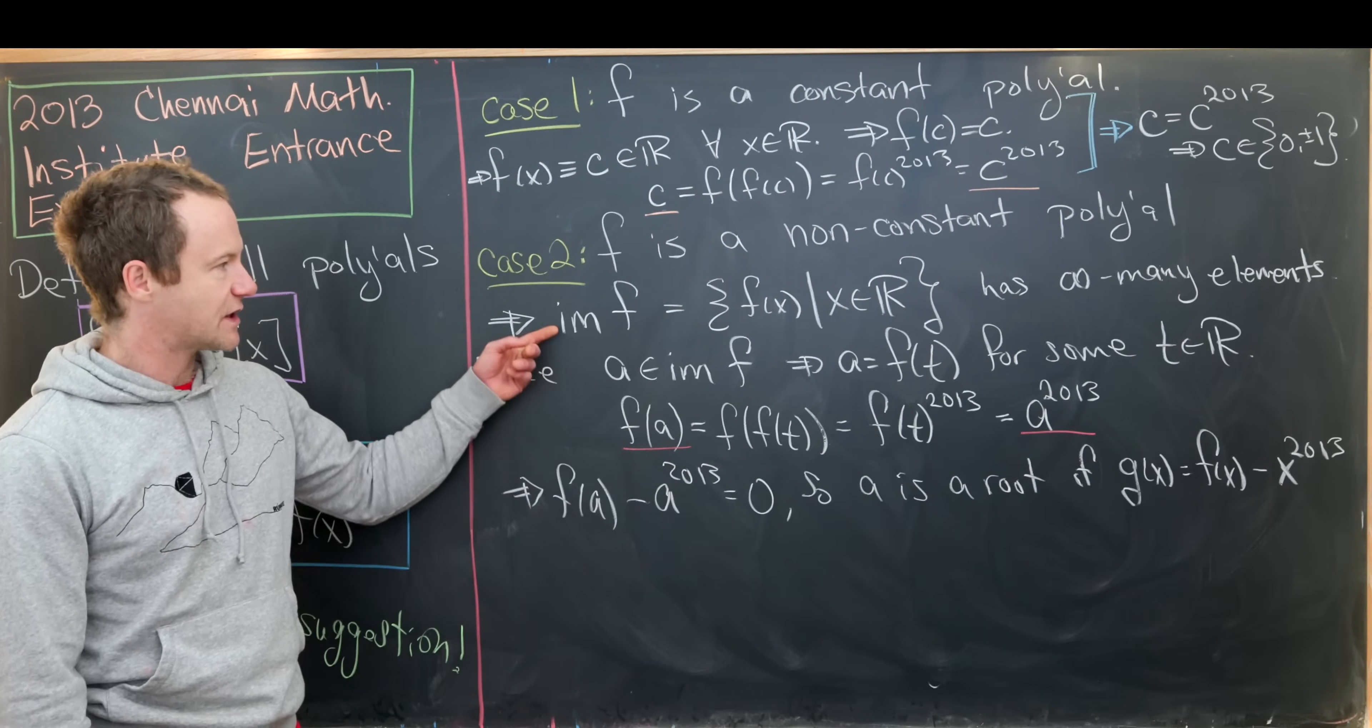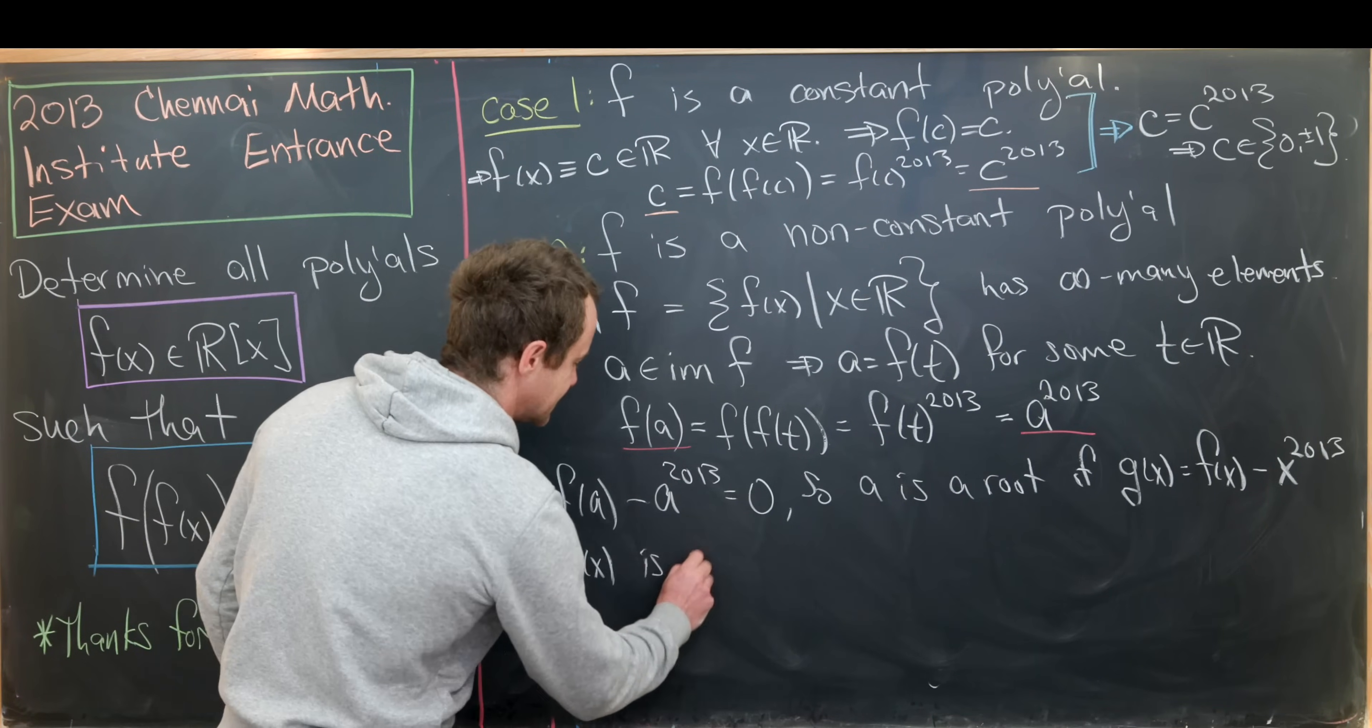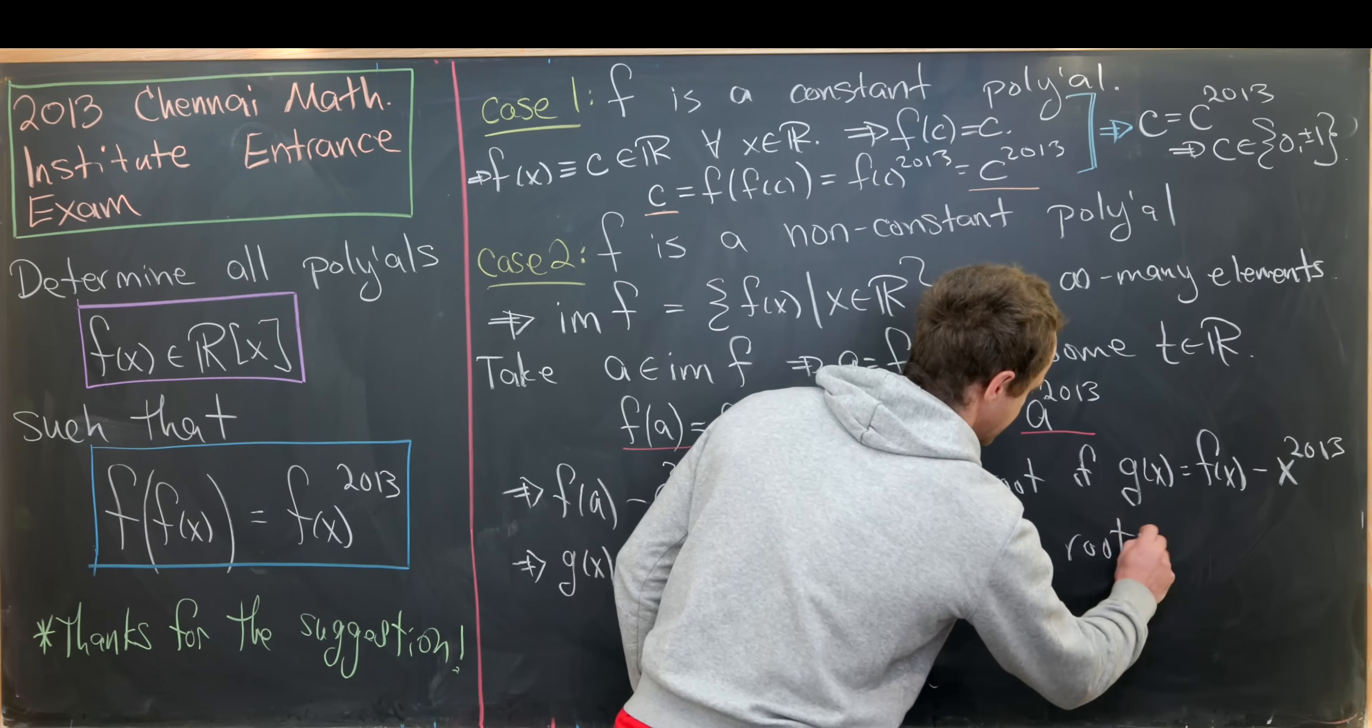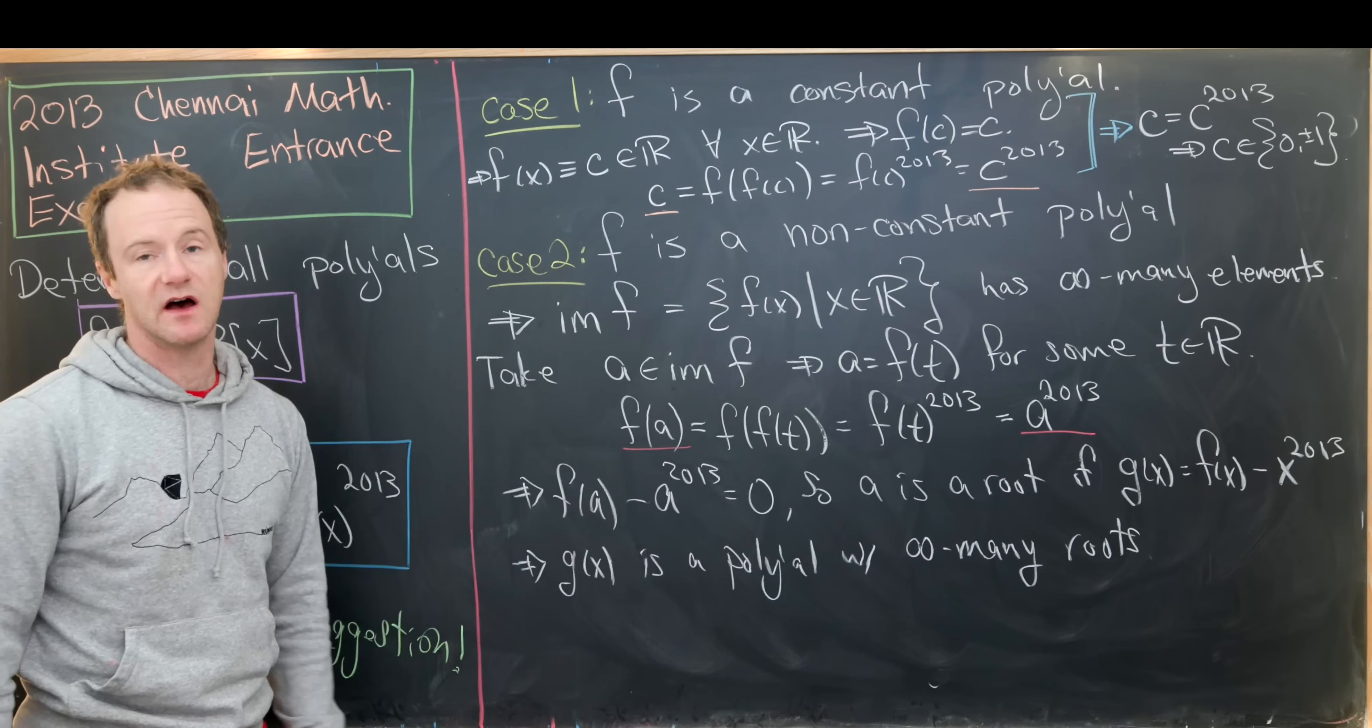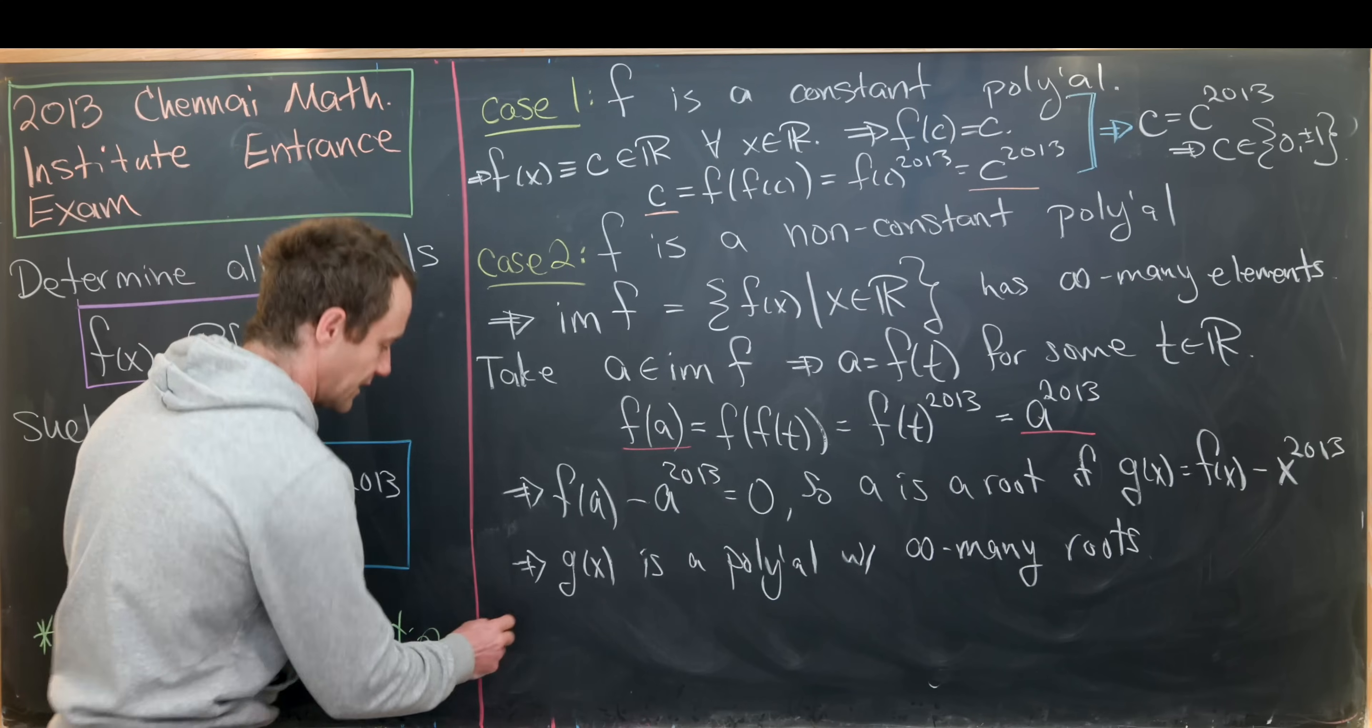But let's go up here and recall that the image of f has infinitely many elements. So that tells us that g of x is a polynomial with infinitely many roots, because this a was taken arbitrarily from the image and shown to be a root of g of x. But there's only a single polynomial with infinitely many roots. Again, this is a well-known result, and that is the zero polynomial.